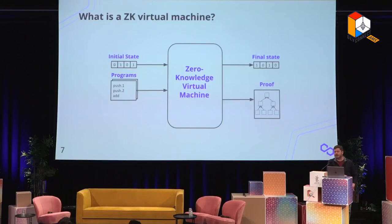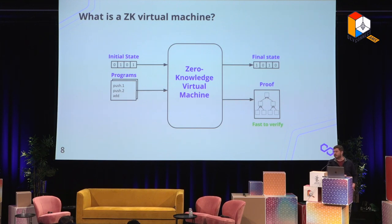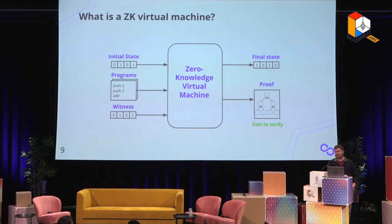With a ZK virtual machine, you also get a proof at the end. This proof proves that the programs were executed correctly — that if you apply the programs to the initial state, you'll get the final state. The proof is fast to verify; in fact, it should be exponentially faster to verify the proof than to run the programs themselves. You also get the ability to provide witness data, which is like secret inputs. For example, in the context of transactions you have to verify signatures, but signatures can be provided as witness data. Witness data does not need to be known to the verifier — only the prover needs to know it — so signatures can be excluded from the data the verifier needs.